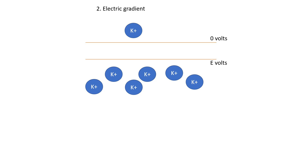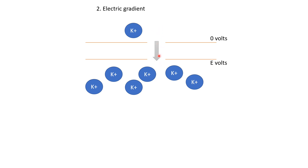The second gradient is the electrical gradient, present because the total charges outside and inside are different. Typically there is more negative charge inside, and the inside membrane potential relative to outside is negative — minus 65 or minus 70 millivolts. Because potassium ions are positively charged, they are attracted towards the negative potential. So although the concentration gradient drives potassium from inside to outside, the electrical gradient tries to bring potassium ions inside.